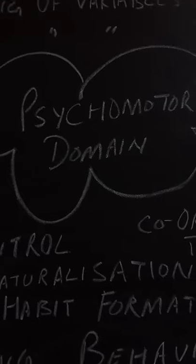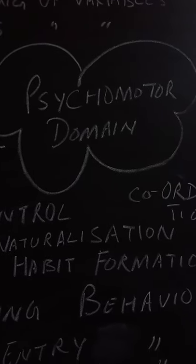Now let's discuss the psychomotor domain — 'kriyatmak parsh.' Psychomotor is a psychological word. When children learn something, they learn how to implement their skills and use them. For example, when children learn to use pencils, they learn how to write. When children get instructions, they learn how to use their skills — that is what we call psychomotor.